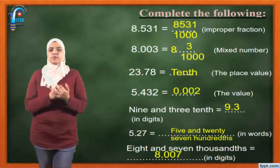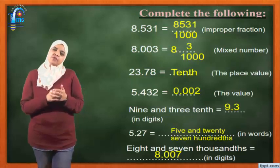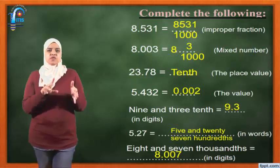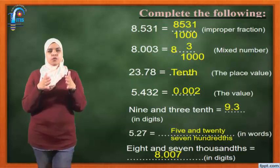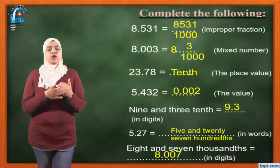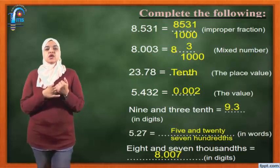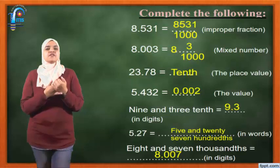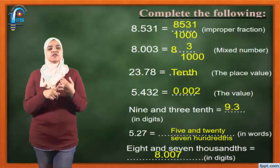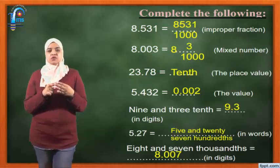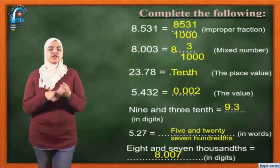23.78 — place value. Do you remember the difference between place value and value? The place value means the position name. In 23.78: 3 is the units, 2 is the tens, 7 is the tenths, and 8 is the hundredths. So the place value of 7 here is the tenths.